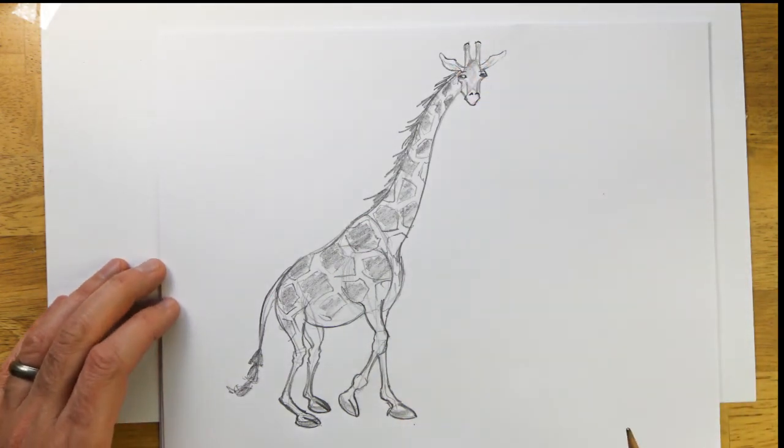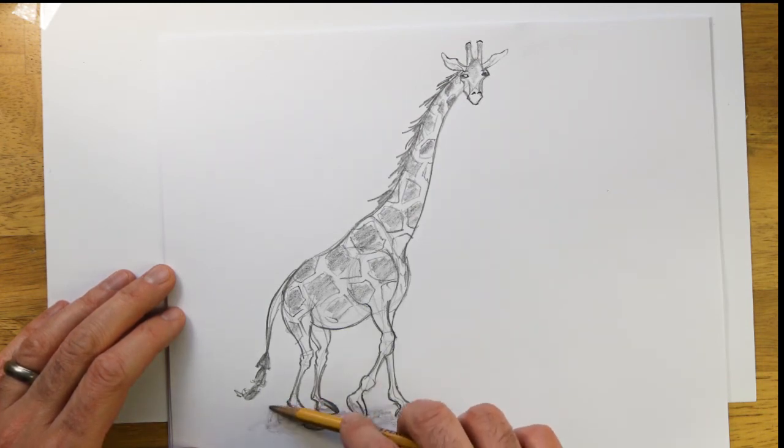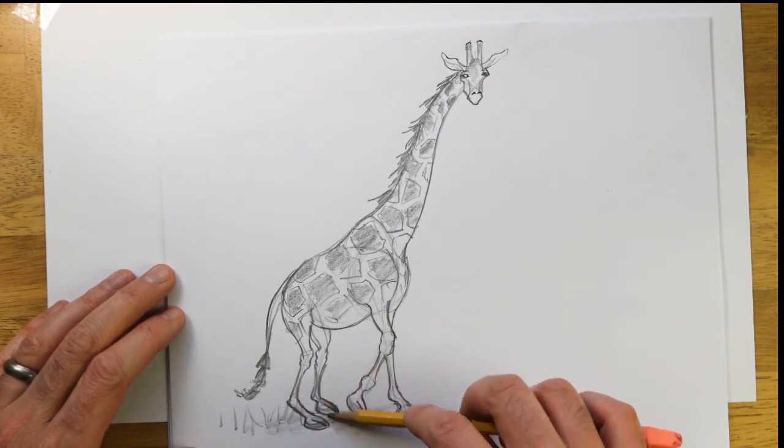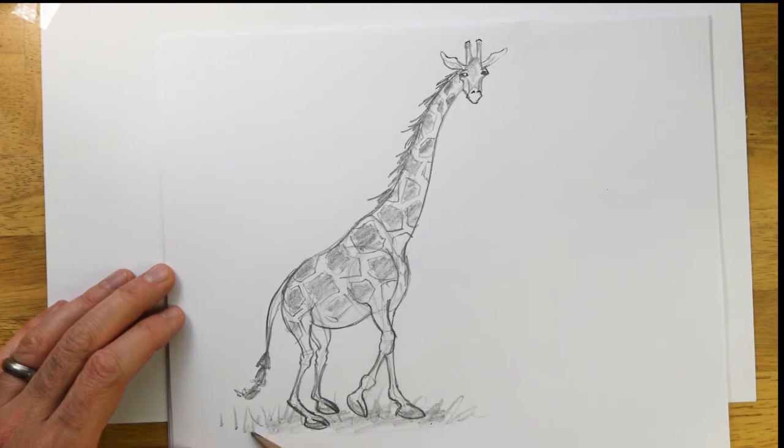We'll shade in the top here. And then we'll add an oval for some shading. Once again, nice and loose. I'll throw some lines in there for the hair. Hair. For the grass, I should say.